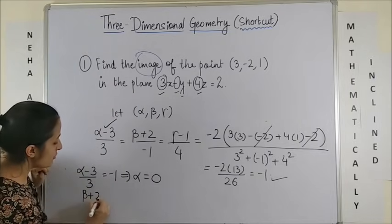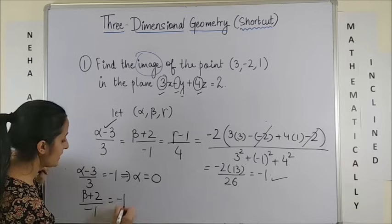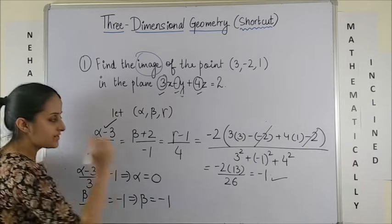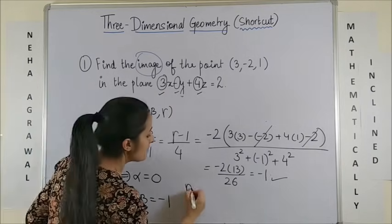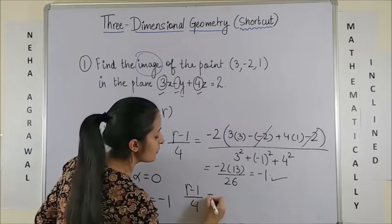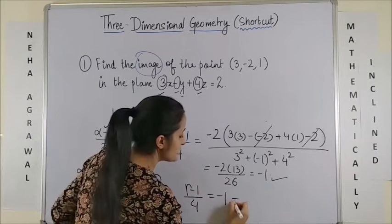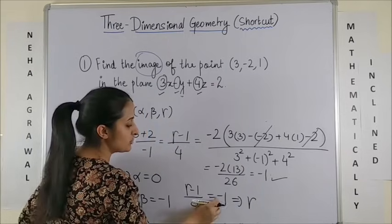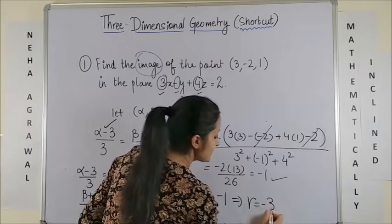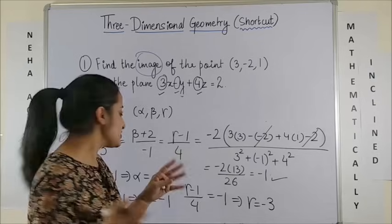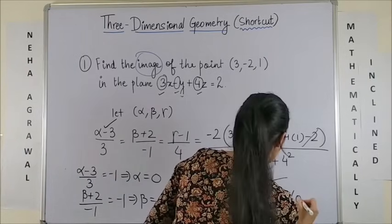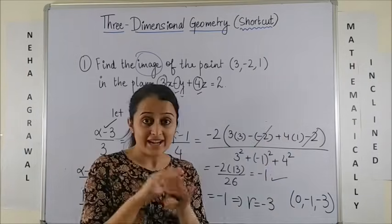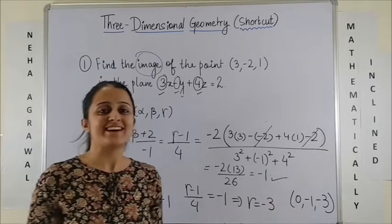Beta plus 2 over minus 1 equals minus 1, giving beta equals minus 1. And gamma minus 1 over 4 equals minus 1, giving gamma equals minus 4 plus 1, so minus 3. So the image of the point is (0, minus 1, minus 3). That's it — as simple as that.